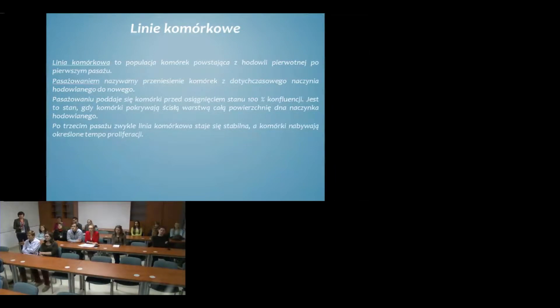Czym są natomiast linie komórkowe? Linia komórkowa to populacja komórek powstająca z hodowli pierwotnej po pierwszym pasażu, czyli po odłączeniu komórek z organizmu. Pasaż to przeniesienie komórek z dotychczasowego naczynia hodowlanego do nowego. W pasażowaniu najczęściej poddaje się komórki przed osiągnięciem stuprocentowego stanu konfluencji, kiedy całkowita powierzchnia naczynia jest pokryta przez komórki, i należy przepasażować komórki, czyli przenieść je do nowego naczynia.